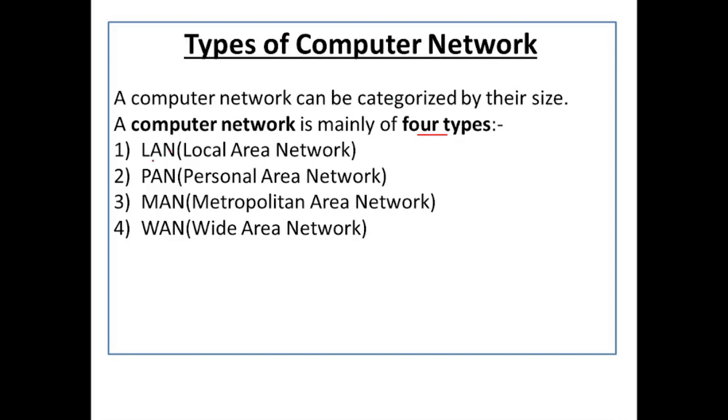A computer network is mainly of four types. First we have Local Area Network (LAN), Personal Area Network (PAN), Metropolitan Area Network (MAN), and Wide Area Network (WAN).